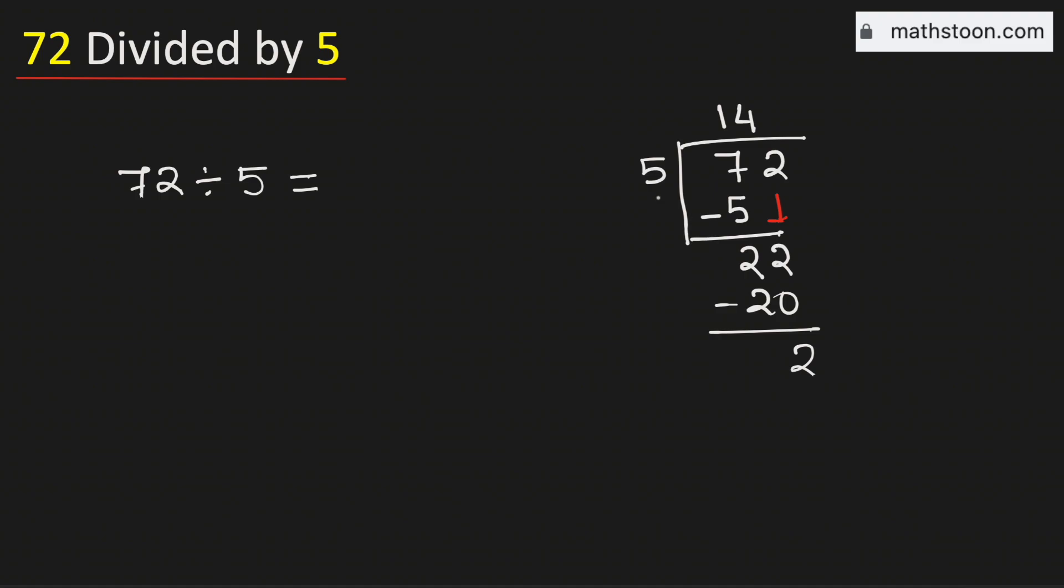Again see that 2 is less than 5 and we have no number to bring down here. So in this case, we will borrow a 0 and for that we need to put a decimal here.